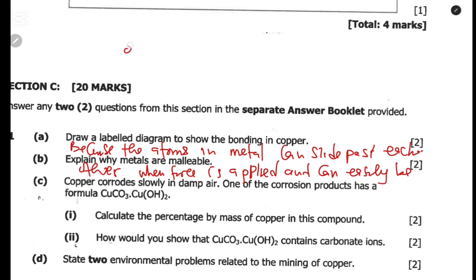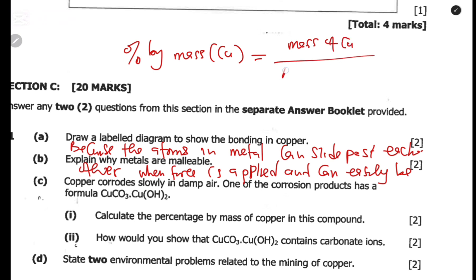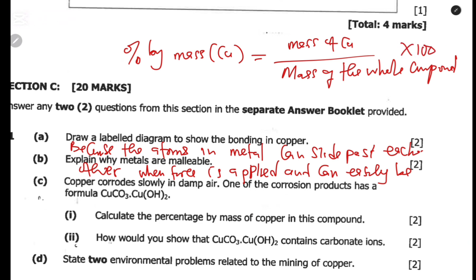To calculate percentage by mass of copper, the formula is: percentage by mass of copper equals mass of copper divided by mass of the whole compound, multiplied by 100.